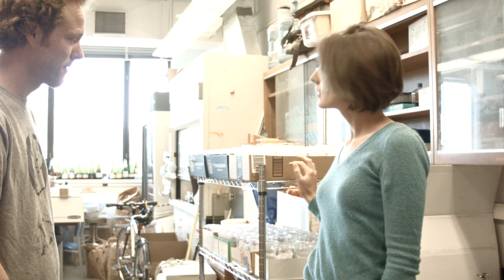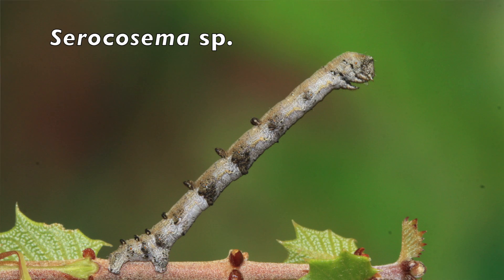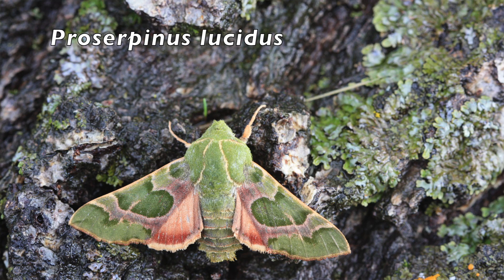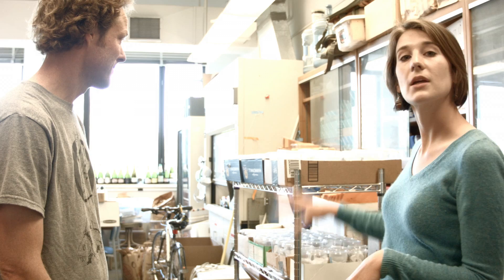Here we have caterpillars that have pupated. After they've eaten a lot of host plant, they metamorphose and go into a chrysalis, often inside a cocoon — a wrapping that helps keep out predators. Once they do that, I put them here and we monitor for the emergence of a moth or a parasitoid fly or wasp. So here we have all the caterpillars that are either becoming moths or becoming parasitoids.